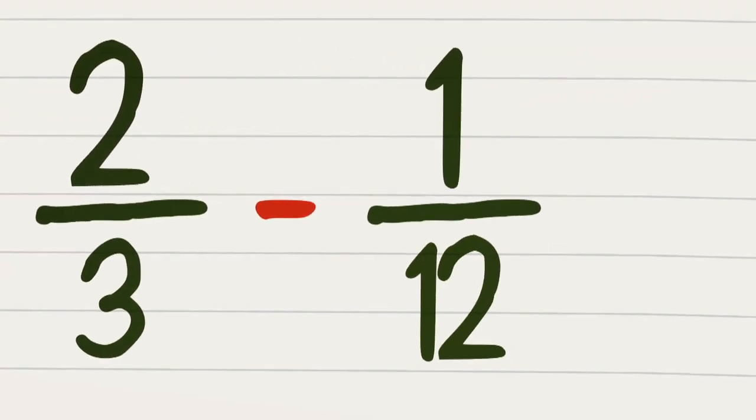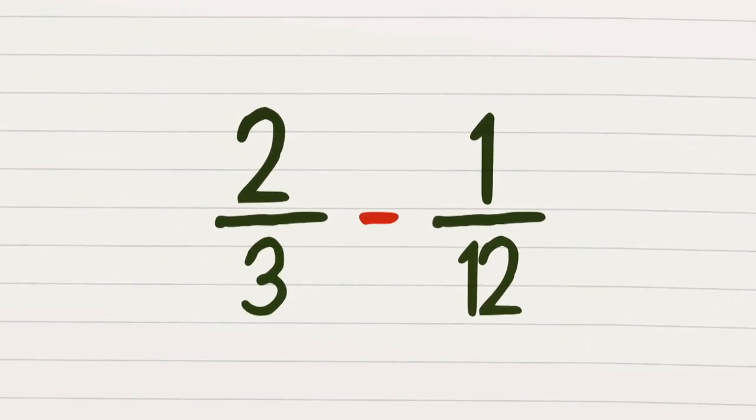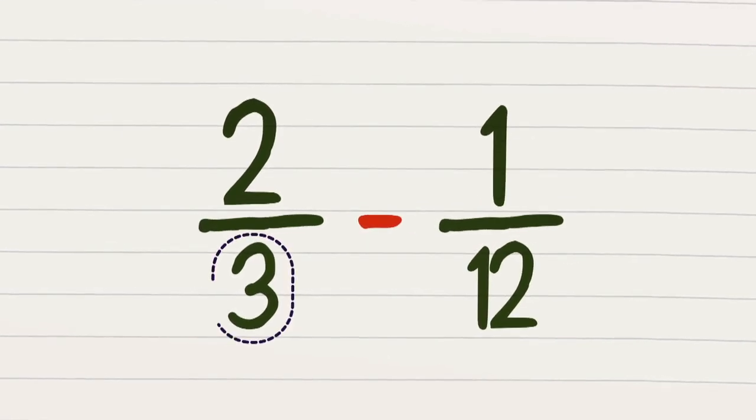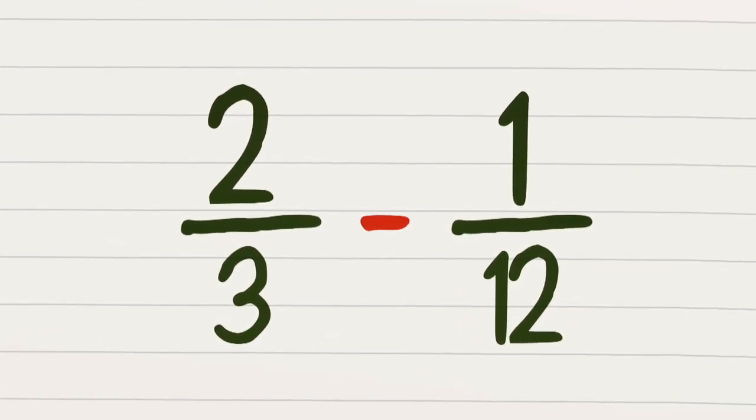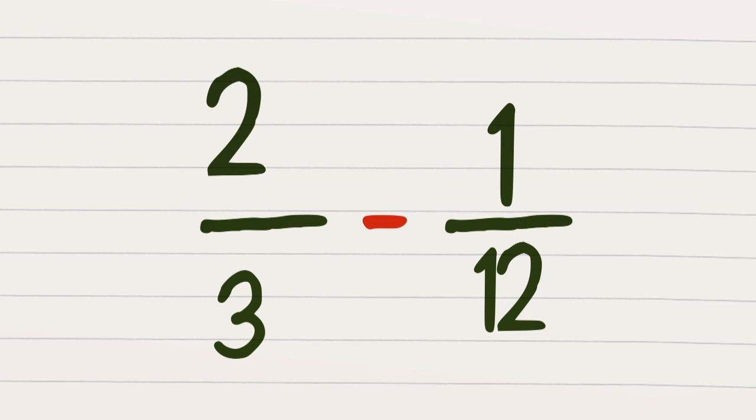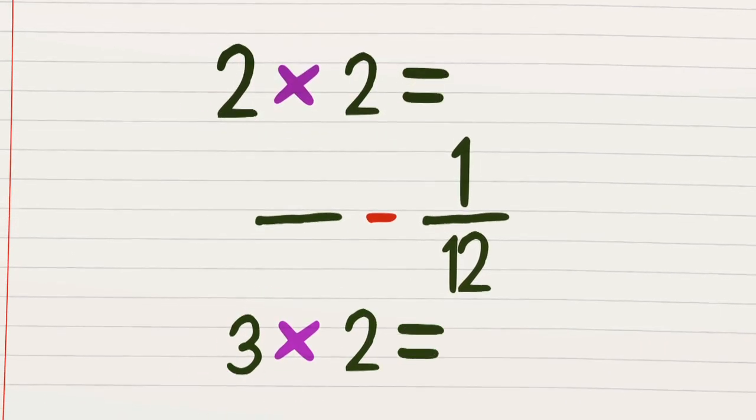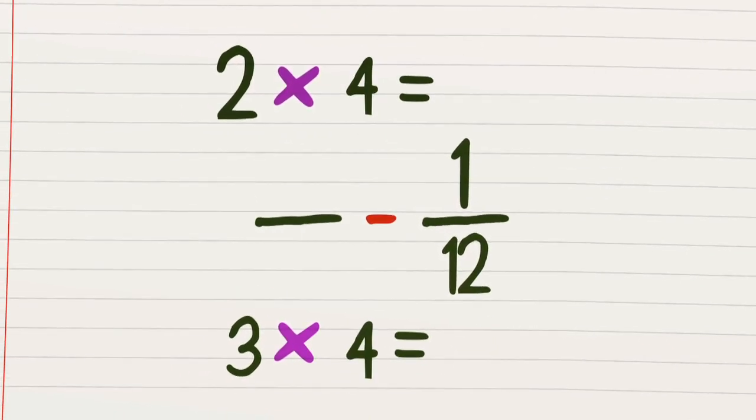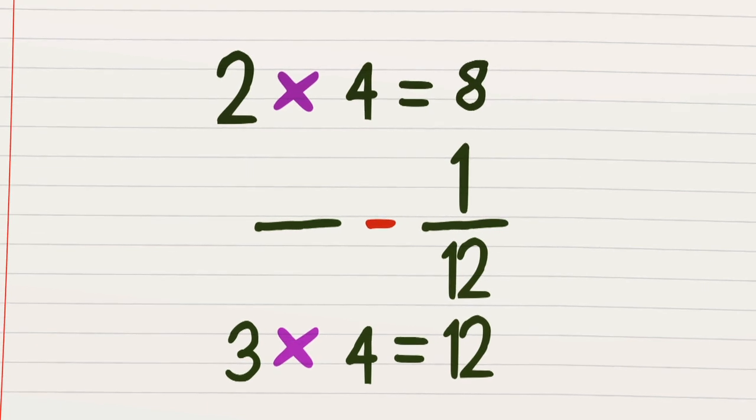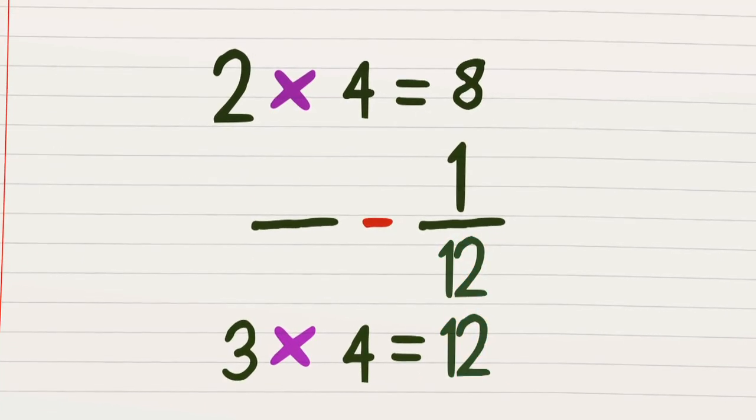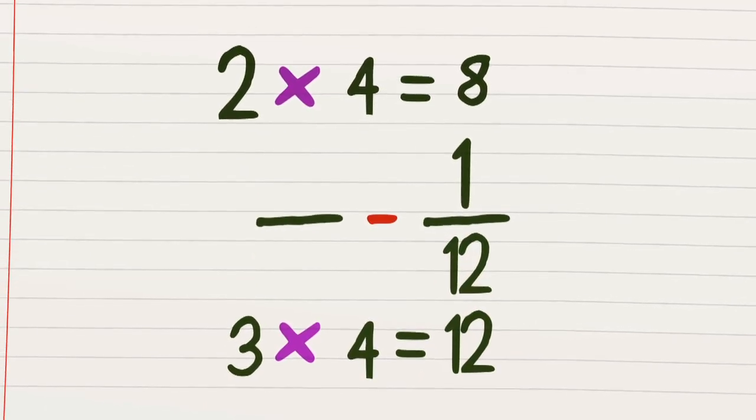You've got two thirds and need to minus one twelfth. Want to know how? Well, I'm here to help. First, check the bottom number of the fractions and aim to find out what can be done to make them the same. Going through the times table is a common approach, looking for the lowest number that can go into both. And so we call it the lowest common denominator. Remember that term because we'll be using it later.